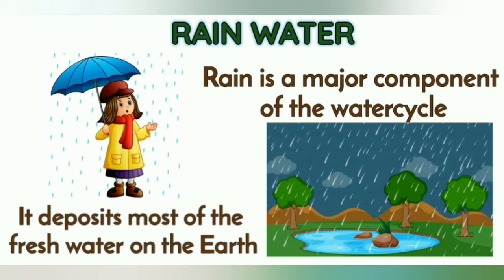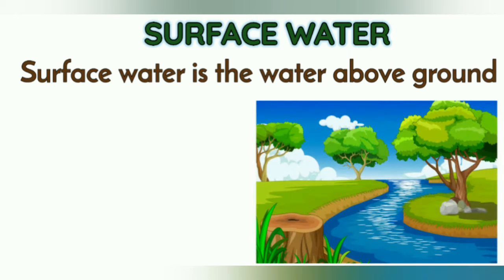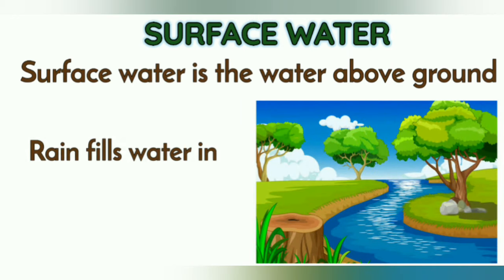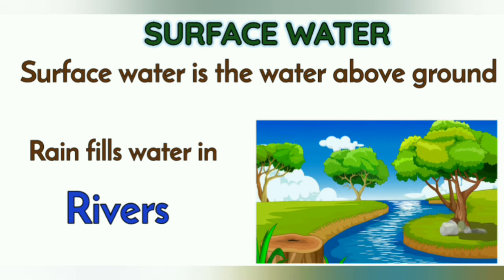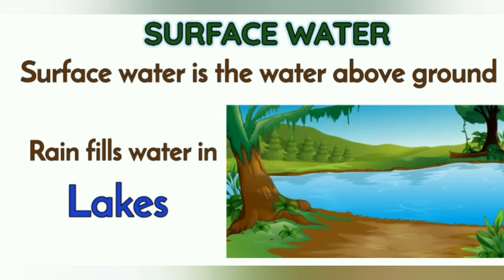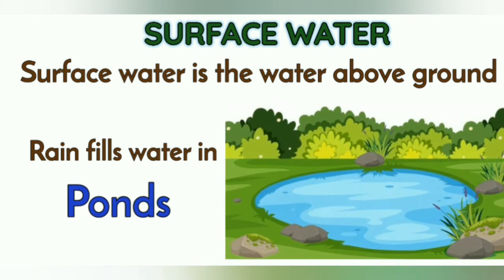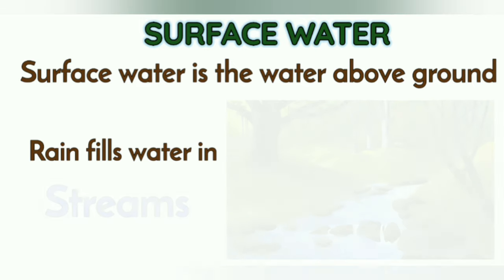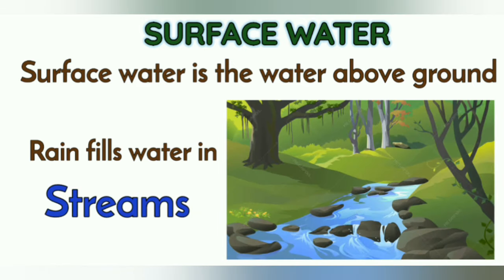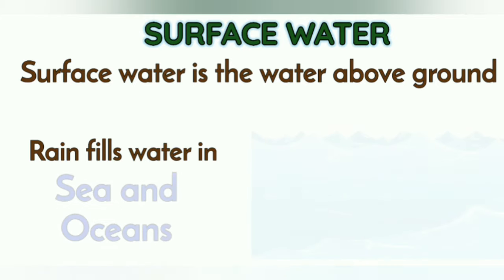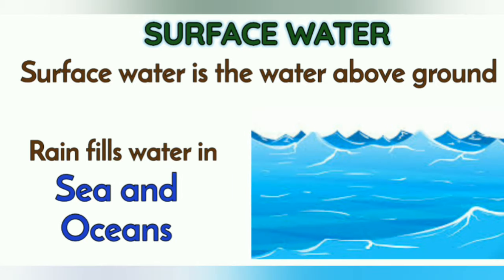Surface water is the water that we see above the ground, such as rivers, lakes, ponds, streams, seas, and oceans.